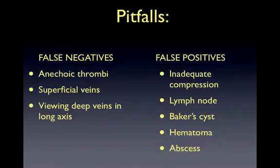False negative pitfalls include failure to recognize an anechoic DVT and instead assuming visualization of an anechoic lumen without confirming patency with compression. Another false negative pitfall includes positioning the probe longitudinally instead of perpendicular to the vessel during compression, as the probe may slip off the vein, and mistaking a deep vein for a superficial vein. False positive pitfalls include inadequate compression and mistaking a DVT for a lymph node, baker's cyst, hematoma, or abscess.